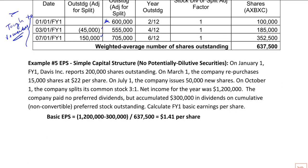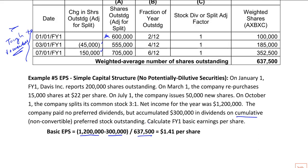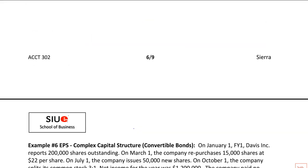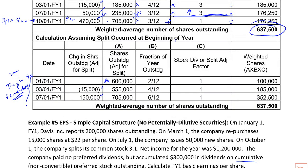Putting it all together: net income is 1.2 million, preferred dividends are 300,000 for the current year since it's cumulative, and we just calculated the weighted average shares outstanding. Those are the basics on how to calculate the weighted average number of shares and basic EPS. Next we'll get into diluted EPS in the next example.